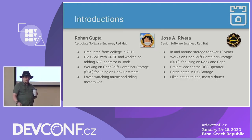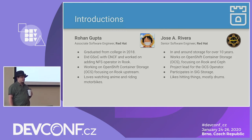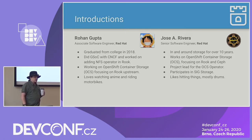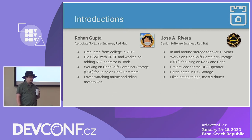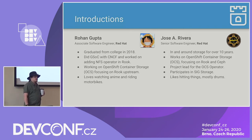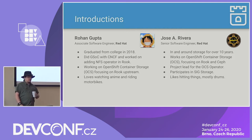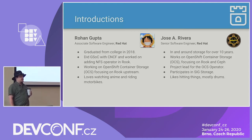Introductions. My name's Jose. I've been at Red Hat for about seven and a half years, working in storage the entire time. I currently work in OpenShift Container Storage with a focus on Rook and Ceph, and I'm the project lead for the OCS operator. I also participate in SIG Storage in upstream Kubernetes, and I like hitting things — mostly drums. Here we have Rohan Gupta. He graduated from college in 2018, did a Google Summer of Code with the CNCF to add the NFS operator into Rook, and we liked that so much we decided to keep him at Red Hat. He's currently working on Rook inside of OCS as well, and he likes watching anime and riding motorbikes.